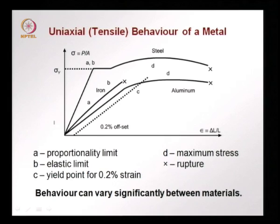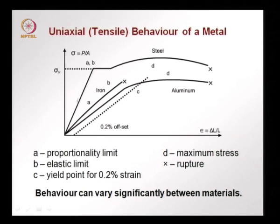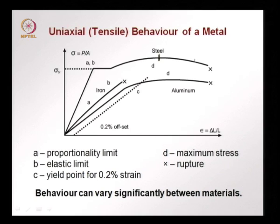When we look at the uniaxial behaviour of a metal, say in tension, we can get different types of behaviours when comparing different materials. The top curve is for mild steel, where we have a linear elastic response culminating in the proportionality limit or the elastic limit. Then we have a yield plateau, then strain hardening, and at point D which is the maximum stress, we have necking occurring. The neck starts to develop and finally failure occurs.